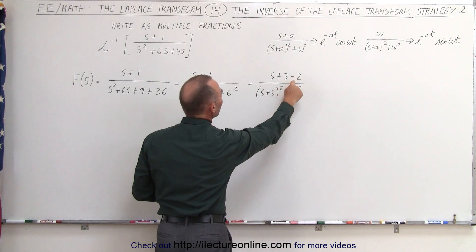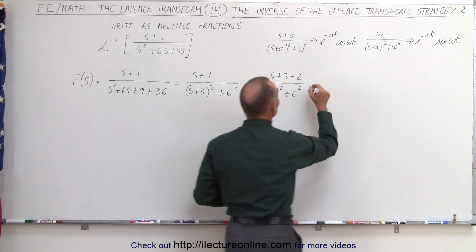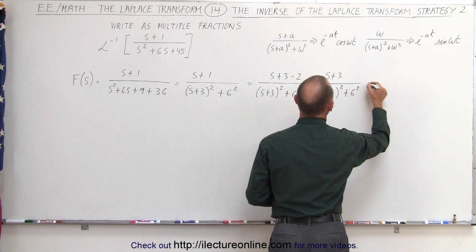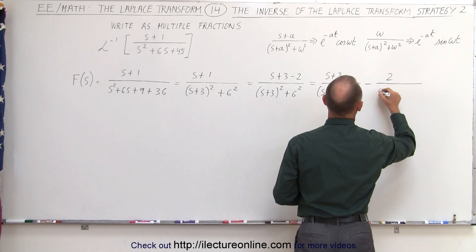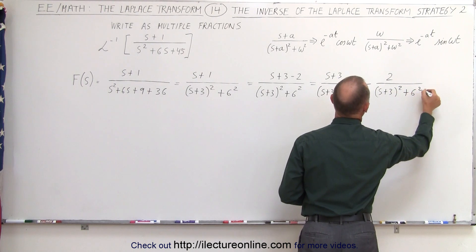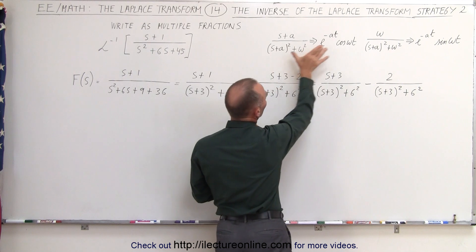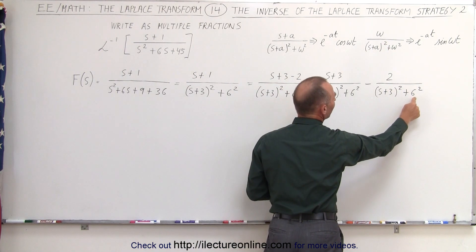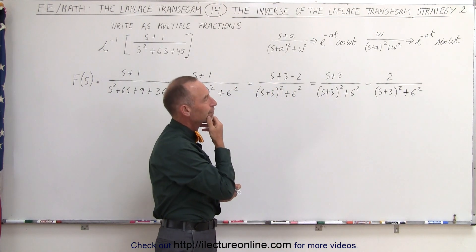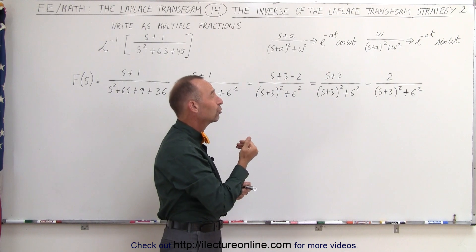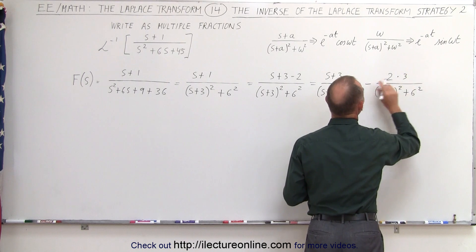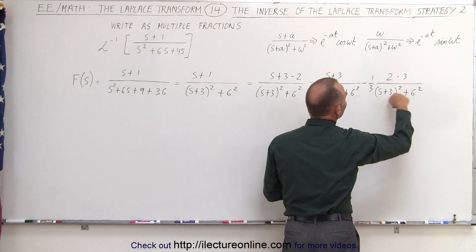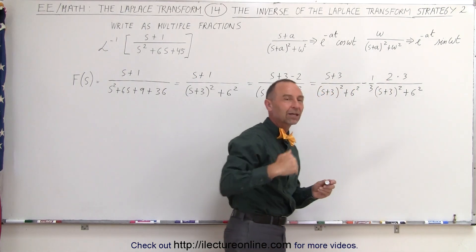Notice that plus 3 minus 2 gives us a plus 1 again. So now this can be written as two separate fractions: S plus 3 divided by S plus 3 squared plus 6 squared, and then minus 2 divided by S plus 3 squared plus 6 squared. Now notice that the first fraction is in the exact form we have over here, so we can translate it back into the time domain. But this second fraction is not quite the same yet because we have a 6 squared in the denominator and a 2 in the numerator. So I can multiply by 6 divided by 2, or equivalently multiply by 3 and at the same time divide by 3. So now 2 times 3 is 6 — I now have this in the exact format, and I still have a 1 third in front which I can carry over.